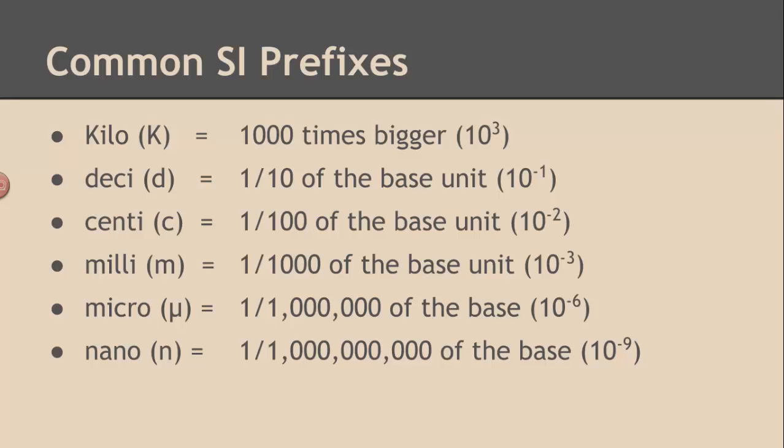Deci is a tenth of, one tenth of, which is ten to the minus one. Centi is one one hundredth of the base unit. That's ten to the minus two. Milli is one one thousandth, or ten to the minus three of the base unit.